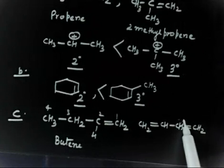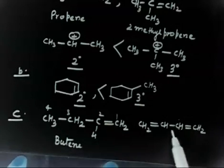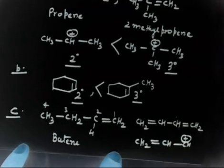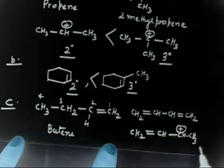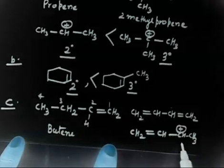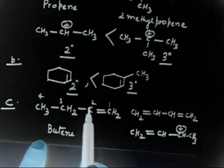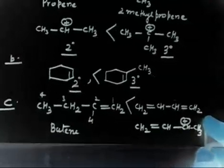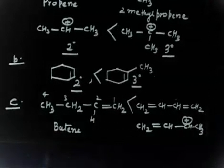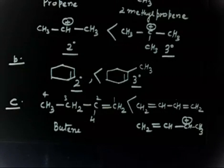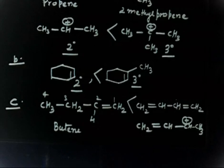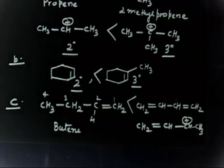In the case of 1,3-butadiene, the carbocation formed is resonance-stabilized — you get an allylic carbocation CH2-CH=CH-CH3+, which is resonance-stabilized. But with 1-butene, you only get a secondary carbocation with no resonance stabilization. So 1,3-butadiene is more reactive. The key principle: reactivity depends on the stability of the carbocation formed. If the carbocation is more stable, the rate of reaction will be faster.